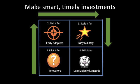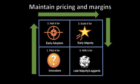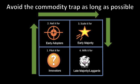You've made smart, timely investments relative to your product and market life cycles, and you've maintained pricing and margins to avoid the commodity trap for as long as possible. That's the path to prosperity.